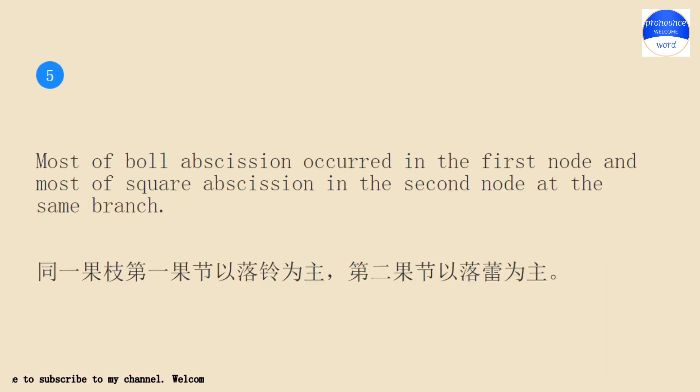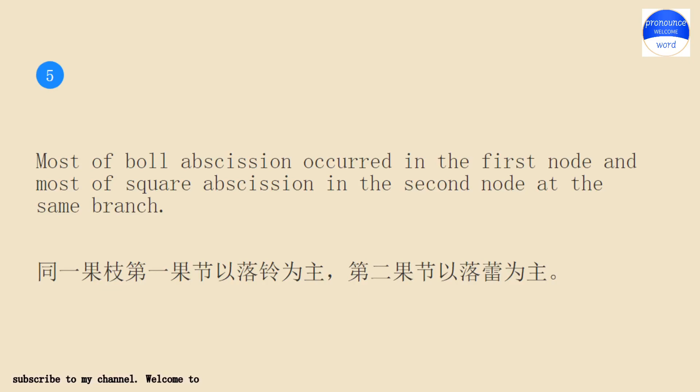Most of bull abscission occurred in the first node and most of square abscission in the second node at the same branch.